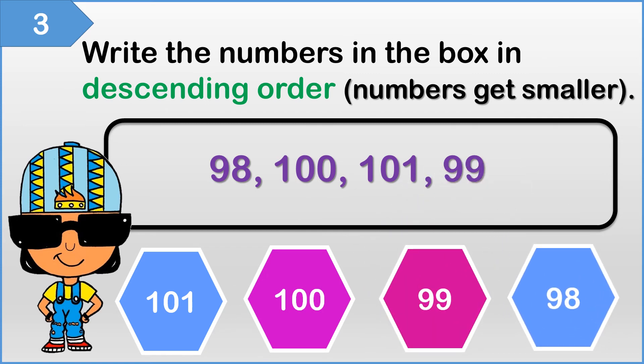So if you got 101, 100, 99, and then 98, you are correct.